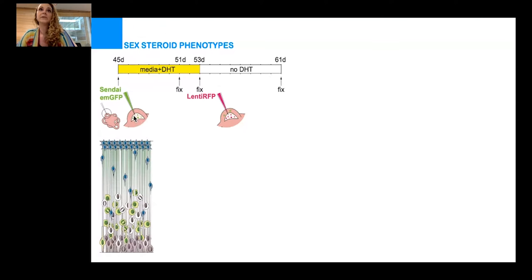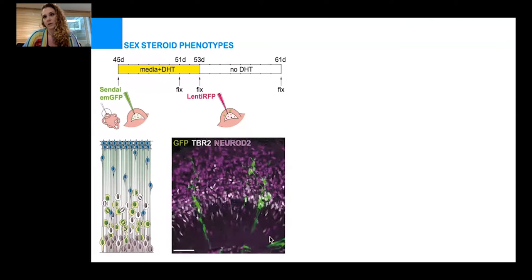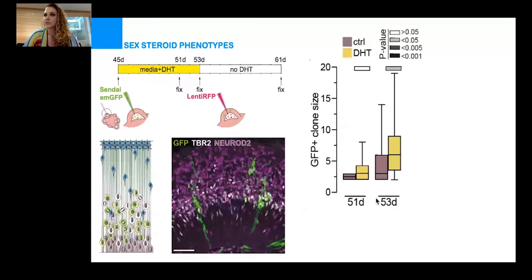We injected GFP-labeled Sendai virus into the ventricle of the organoid. This labeled individual radial glia—these purple cells here—and then we exposed organoids to DHT for eight days. This is what a clone looks like after eight days. After eight days, we could observe that in organoids treated with DHT, here in yellow, the size of the GFP clone was bigger.